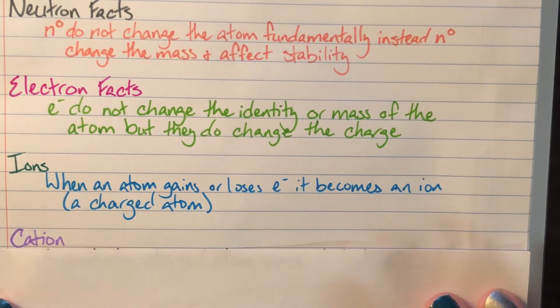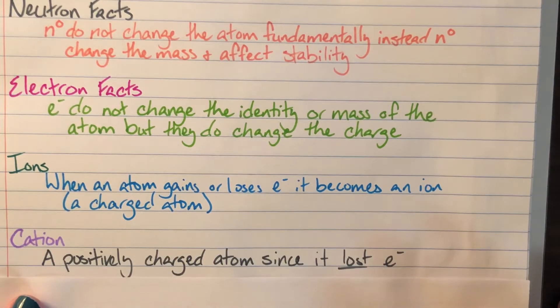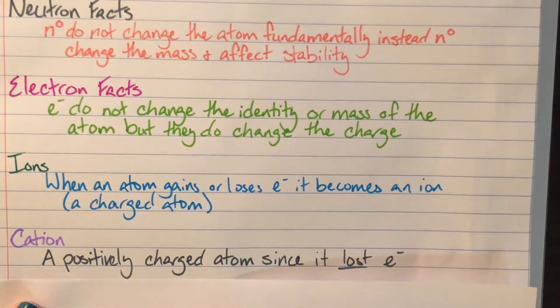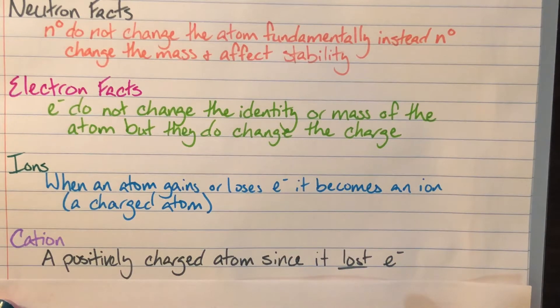So we have something called a cation. And cations are positively charged. Cats have paws and cations are positively charged. The reason that cations are positively charged is because the atom lost electrons. It lost negative things or it gave away negative things. So it has an electrical charge that is positive because now we have more positives from our protons than we have negatives from our electrons.